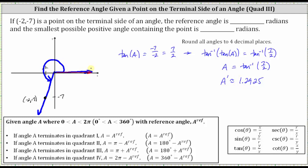The initial side is along the positive x-axis, and the terminal side would be in the opposite direction of the angle we are looking for. The terminal side would be here. And the measure of this angle is 1.2925 radians.